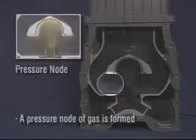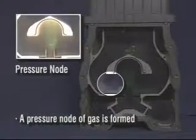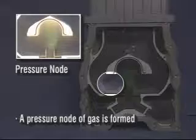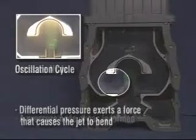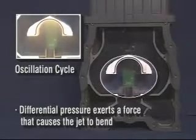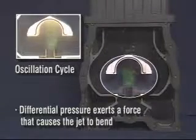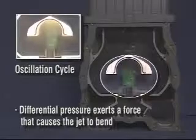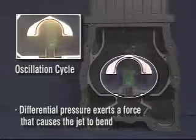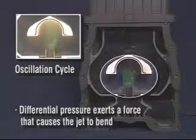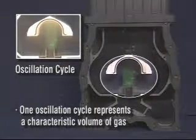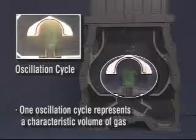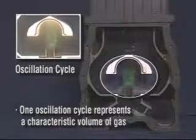A pressure node of gas is formed, creating a difference in pressure either side of the jet. In this way, the jet oscillates from one side of the chamber to the other. One oscillation cycle represents a characteristic volume of gas.